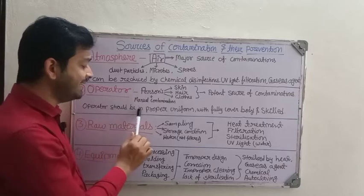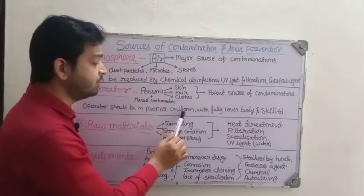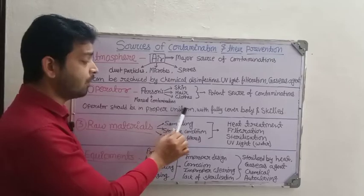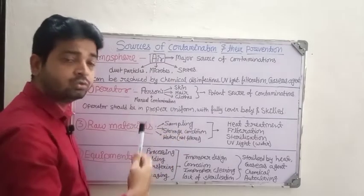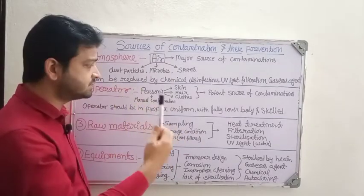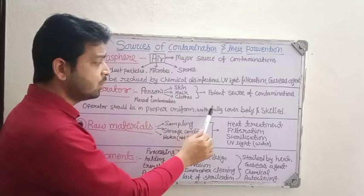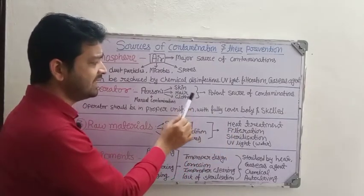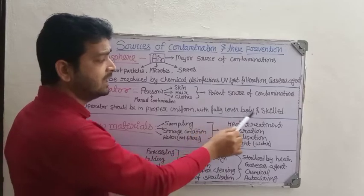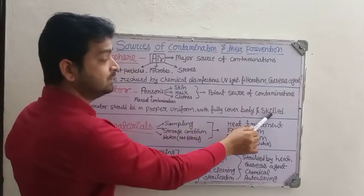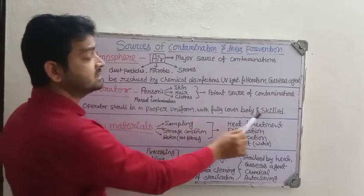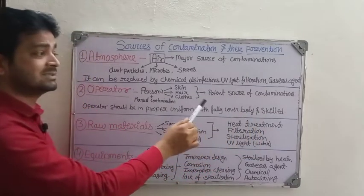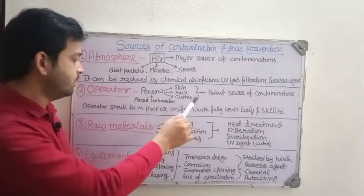For prevention, the operator should be in proper uniform — wearing a gown, mask, gloves, and all those things with a fully covered body. Skin, hair, and clothing should be covered properly. The operator should also be skilled so that manual contamination can be avoided, because a skilled person knows how to do what needs to be done.